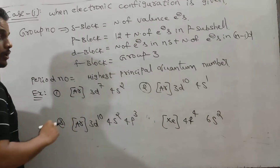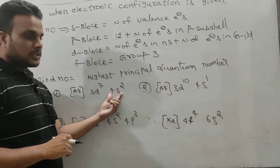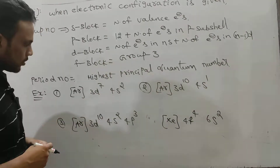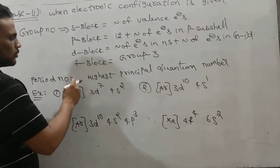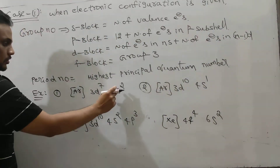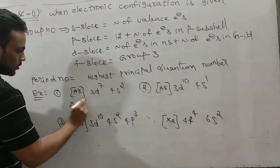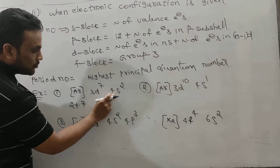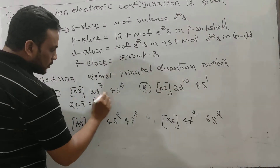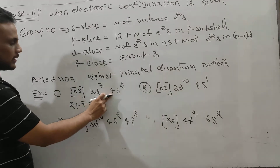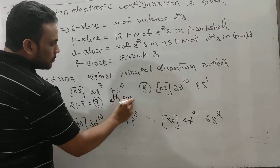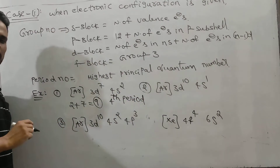Let's talk about this. It is a D-block element — that is visible. After completion of 4S, the electron enters 3D and 3D is partially filled. It is clear that it is a D-block element. For a D-block element, the trick is: number of electrons in NS plus number of electrons in (N−1)D. So NS has two electrons plus (N−1)D has seven electrons — valence shell and penultimate shell. N value is 4, N−1 is 3. Two plus seven is nine. The group number is 9. And what about period number? You see, we have 3 and 4 — the highest value is 4. So highest principal quantum number gives us the fourth period.